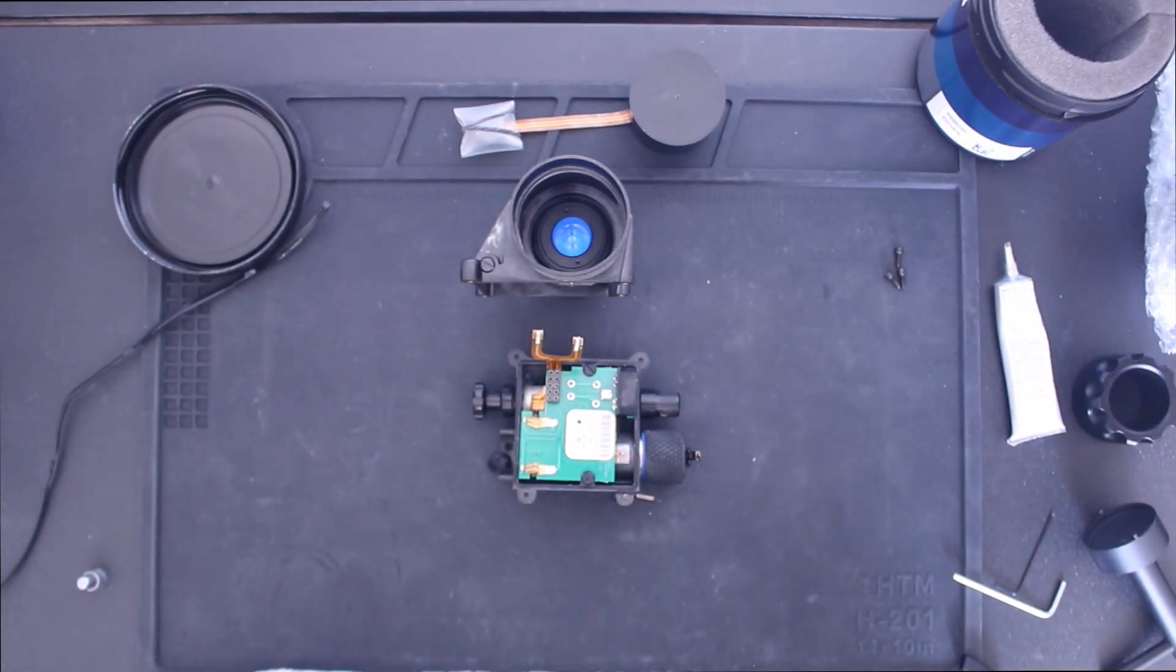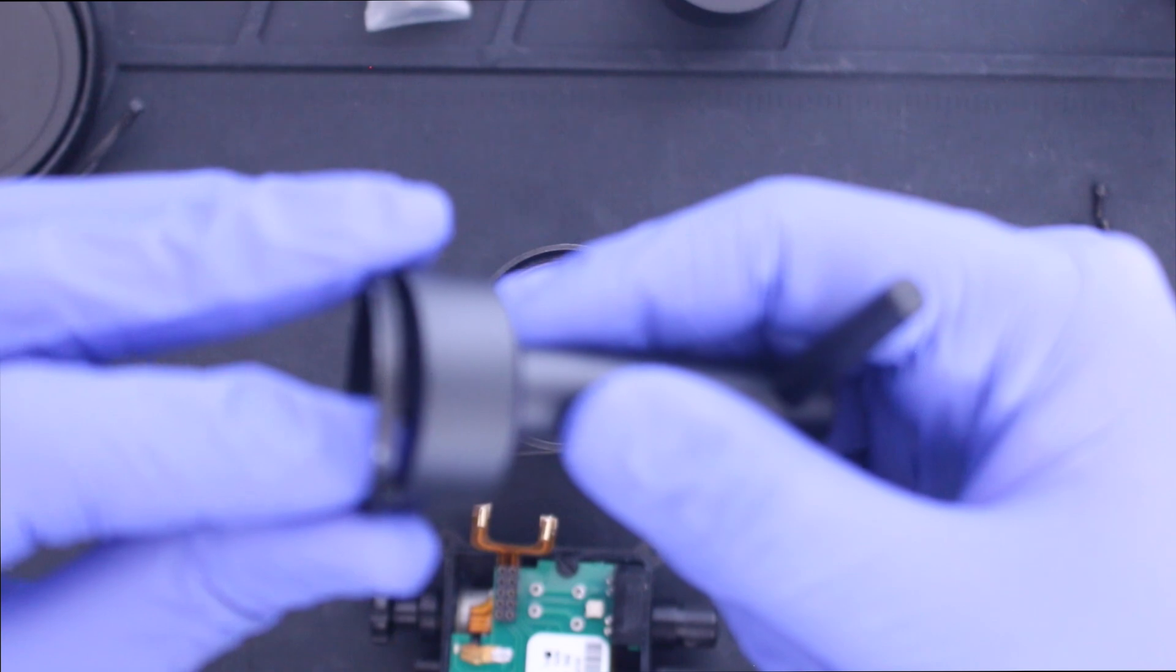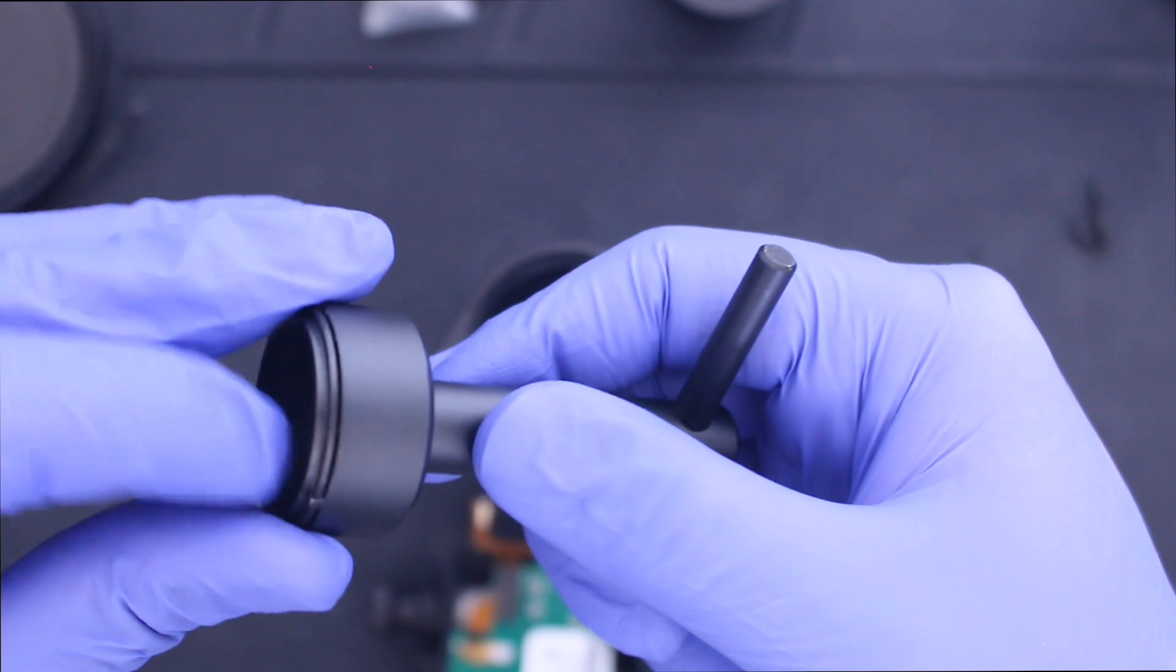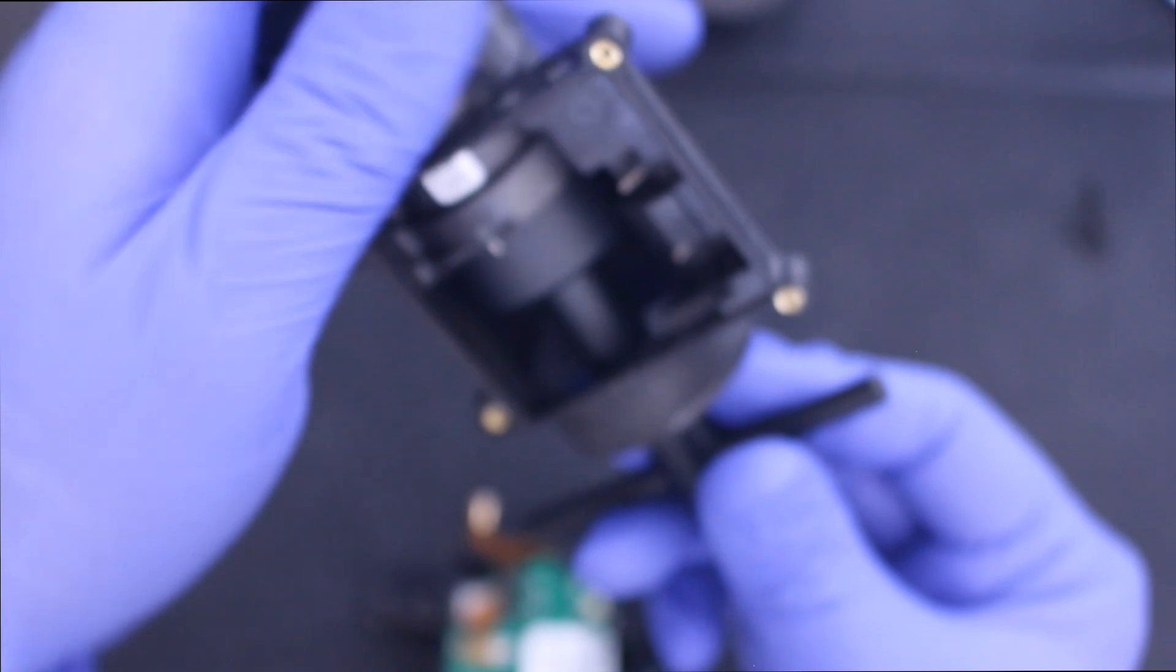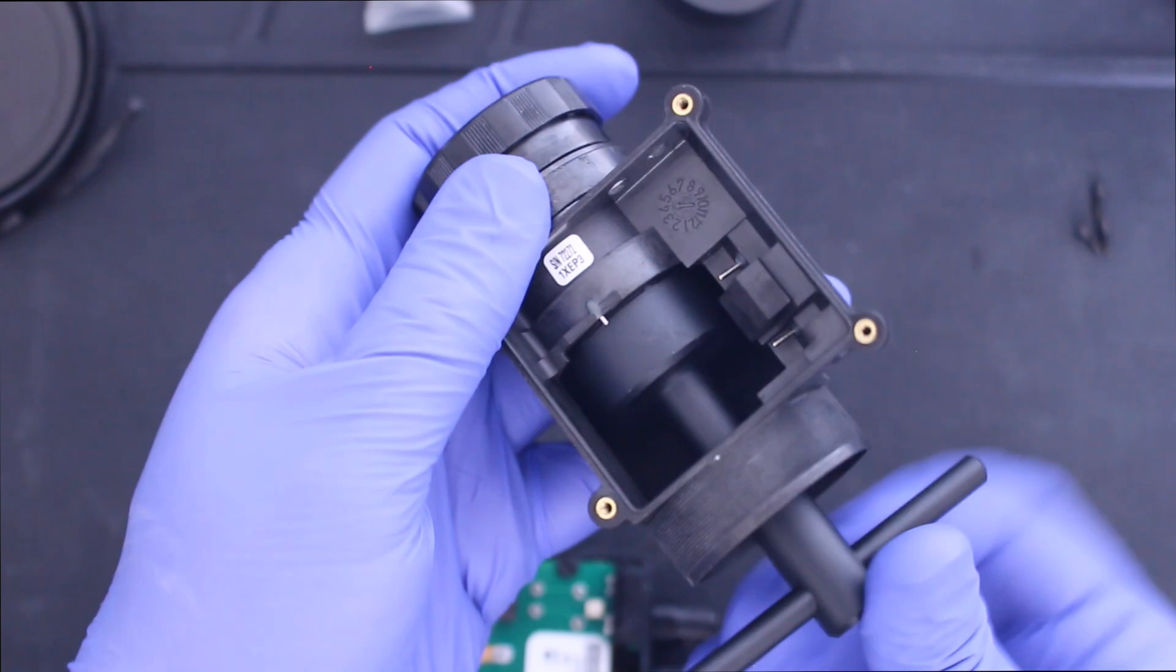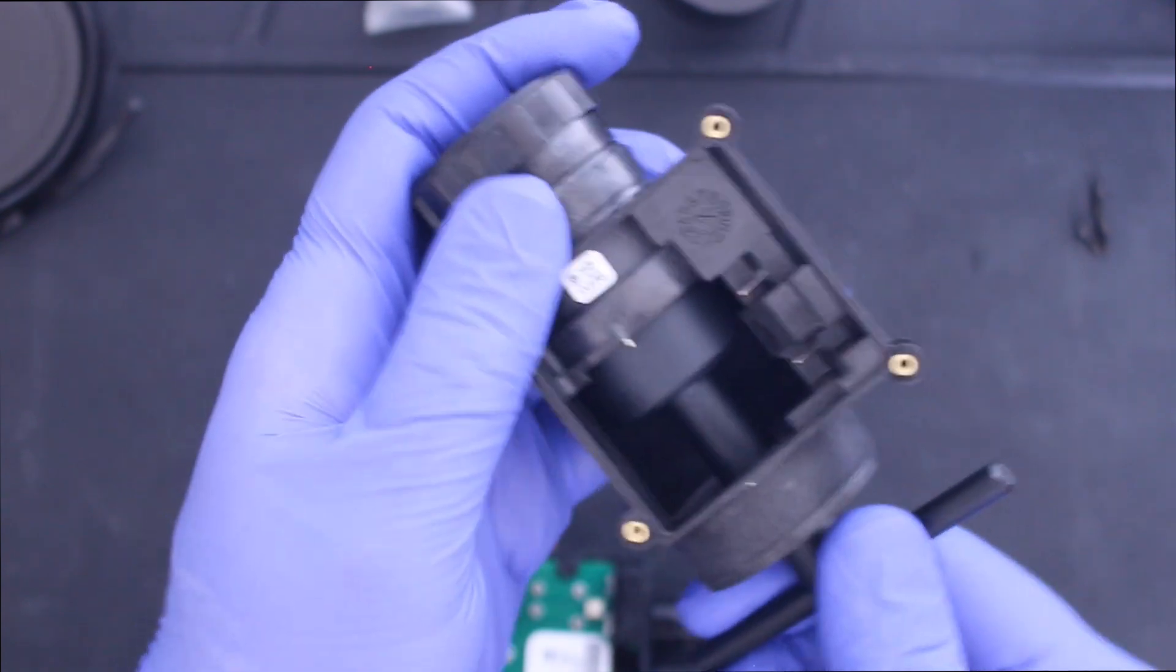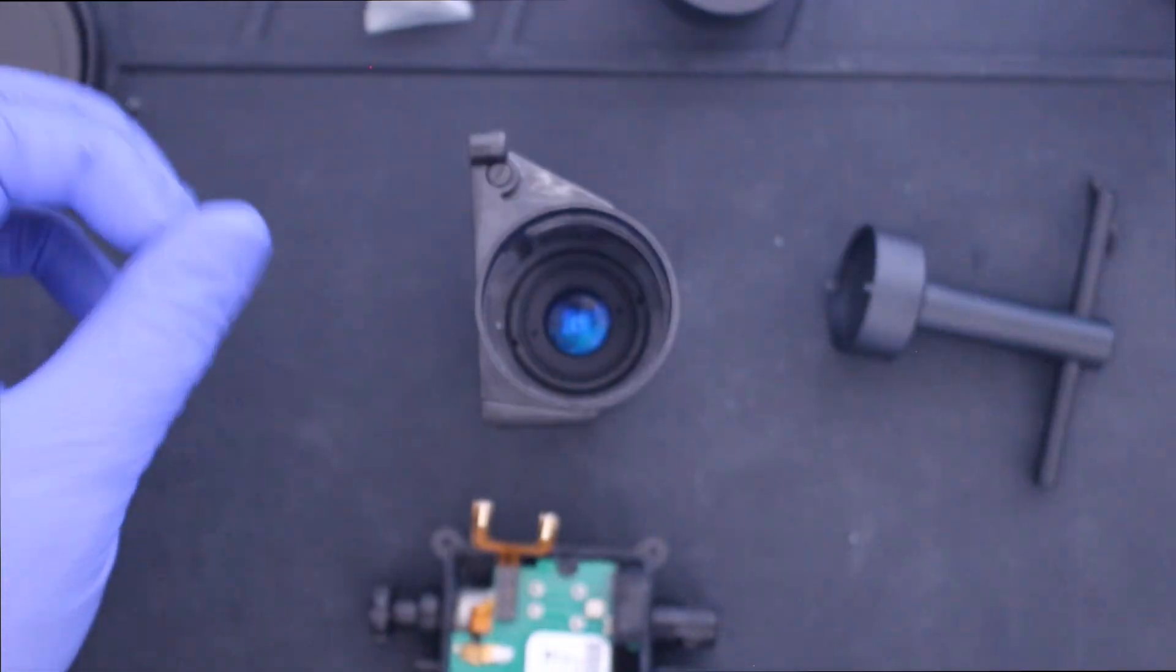After you screw it in, you are going to lock it into place with the stop ring. Set the ring into these little tabs right here. Put it in place. Threads on. It is locked into place.